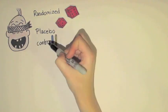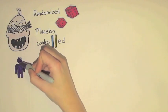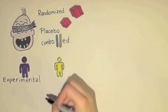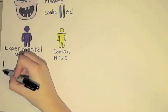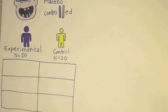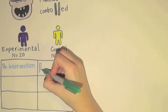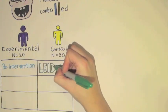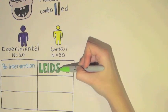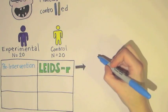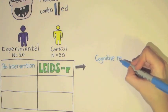In this triple-blind, randomized and placebo-controlled trial, 40 healthy individuals were randomly assigned to an experimental or control group, which resulted in 20 participants in each group. In the pre-intervention phase, all participants filled in the revised Leiden Index of Depression Sensitivity, a validated questionnaire that assesses cognitive reactivity to sad mood.